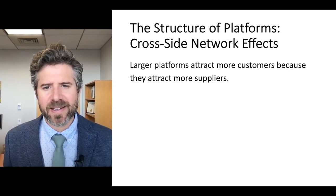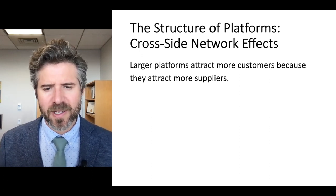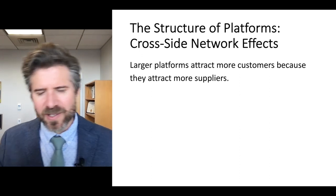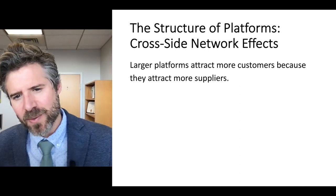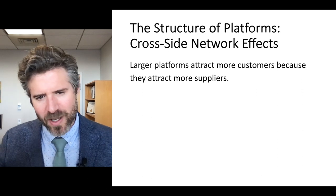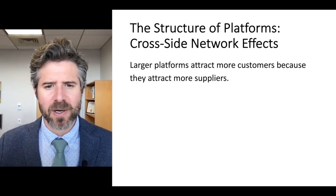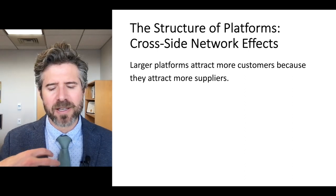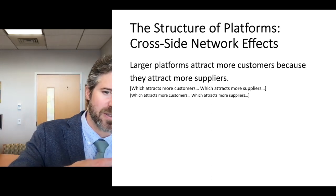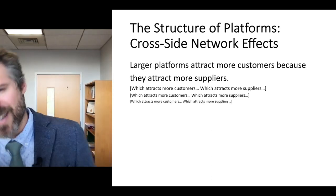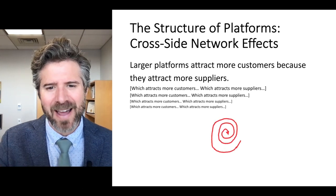Cross-side network effects: larger platforms attract more customers because they attract more suppliers. As a user, I'm interested in how many suppliers there are in a particular market. If there are a lot of users like me, that attracts suppliers. If there are a lot of suppliers, that attracts more users. More users attracts more suppliers, and so on — it's a recursive, cyclical pattern.